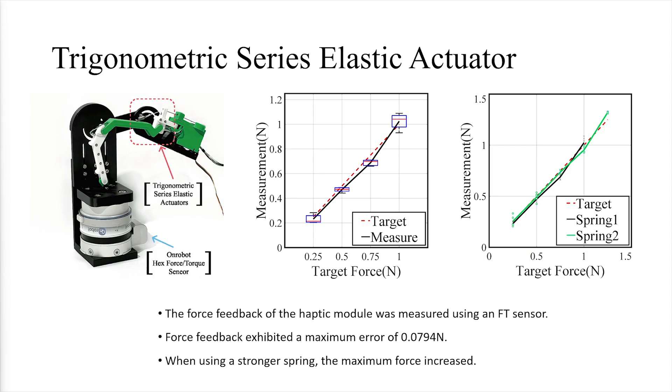Using a stronger spring in the module increased the maximum force output, providing more robust feedback. This shows that the haptic module's performance can be adjusted by modifying the spring strength, offering flexibility based on task requirements.